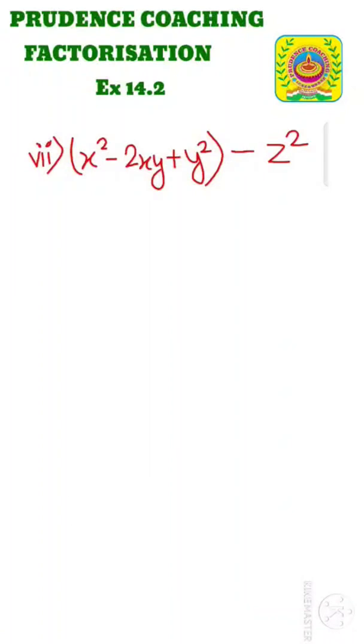Students, listen very carefully. This sum is very important. Here we have x² - 2xy + y² and here separately minus z². We have to make this in a way that it becomes a square of a number, and we have minus z², that is a² - b² form.